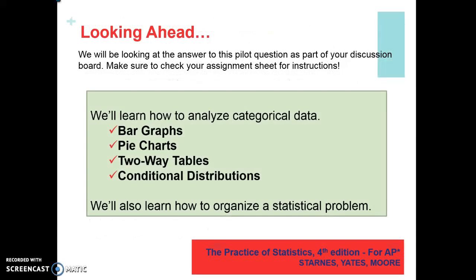In the next section, we said there were two types of data — categorical and quantitative. We're going to take a look at categorical data and exactly how categorical data can be correctly displayed in a graph.